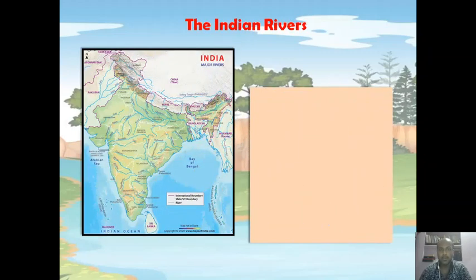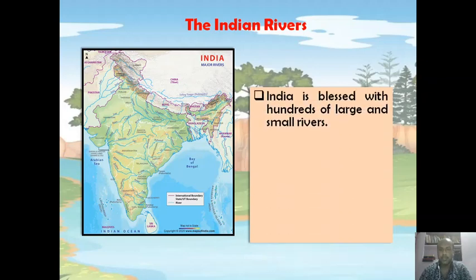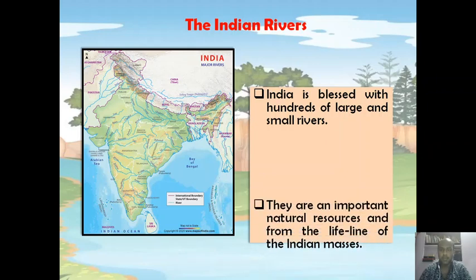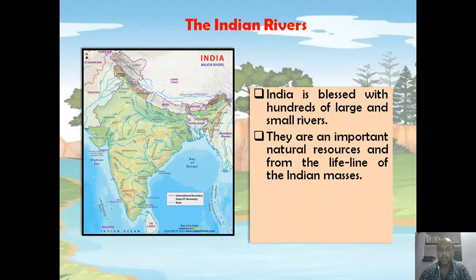The Indian rivers. India is blessed with hundreds of large and small rivers — there are many rivers in different parts of our country. They are an important natural resource and form the lifeline of India. We use the river water for the purpose of irrigation, transporting goods from one place to another, and also for generating hydroelectricity.